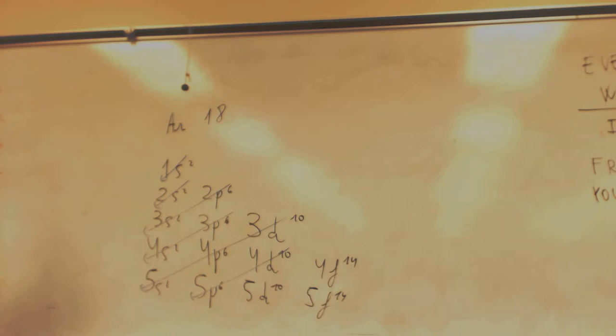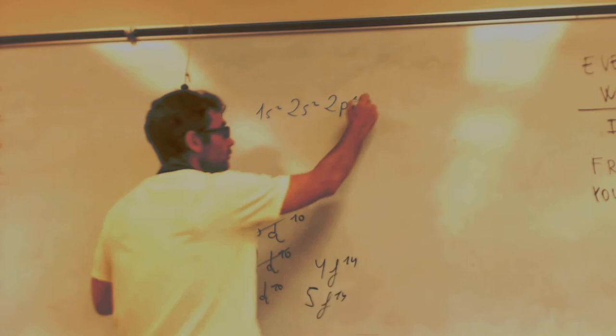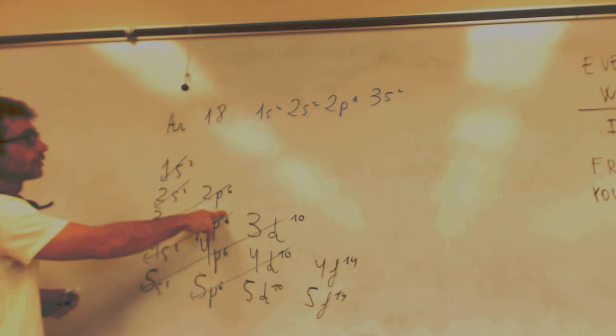For 18 electrons it would be 1s2, 2s2, 2p6, 3s2, 3p6. Yeah.